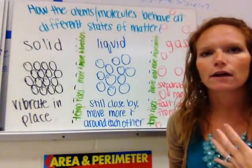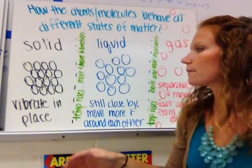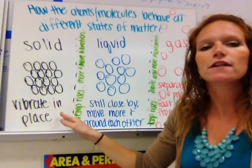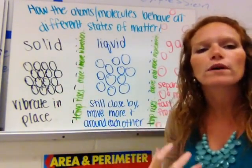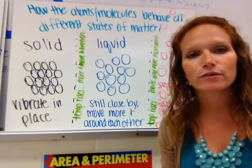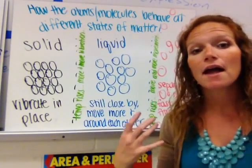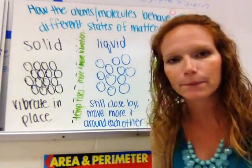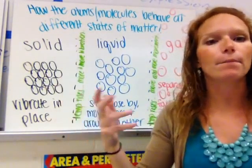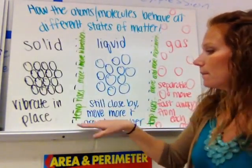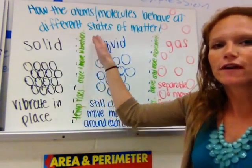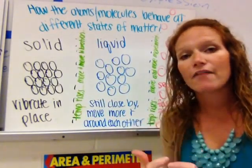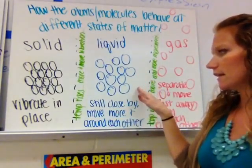So how do atoms or elements behave at different states of matter? When they're in a solid, they each have their own specific spot and they're just there vibrating in place. Think of sitting in a classroom — you have your desk, and you can move at your desk: write, lean back, lean forward, move papers around — but you're not supposed to get up. As the temperature rises, they have more and more vibration until eventually they start breaking free from that one specific spot, and at that point they're considered in a liquid state.